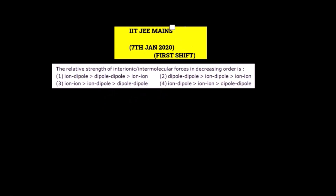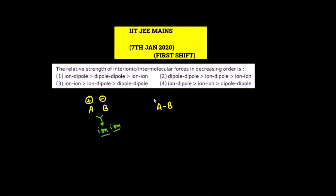Different forces of attraction are given — ion-ion, ion-dipole, and dipole-dipole. For example, consider two species A⁺ and B⁻ attracting each other — this is called ion-ion attraction. In another example, a species AB with partial positive and partial negative charges faces a proper B⁻ ion; the attraction between the proper negative and partial positive is called ion-dipole attraction.